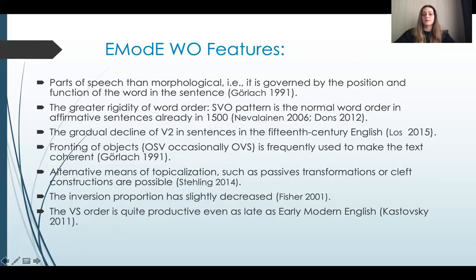Certain very important syntactic features in this period relevant to the current investigation are outlined on the slide. The most essential are: the SVO pattern emerges as the normal word order in affirmative sentences; the gradual decline of verb-second in sentences in 15th-century English; fronting of objects is frequently used to make the text coherent; the inversion proportion compared with previous periods has decreased, although not dramatically; and constituents of the noun phrase structure in Early Modern English are more or less the same as in Modern English.